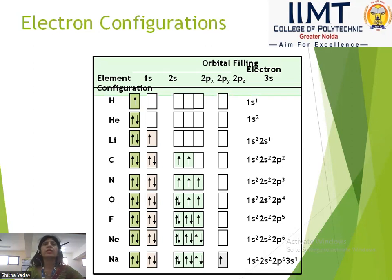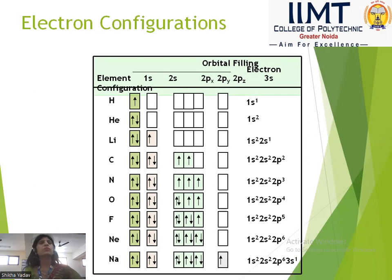Oxygen has 4 electrons in the 2p shell: 1 electron in px, 1 electron in py, 1 electron in pz, and the fourth electron in the anticlockwise direction. Next is fluorine: 1s², 2s², 2p⁵.